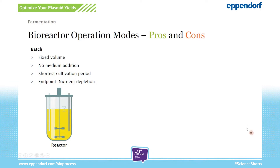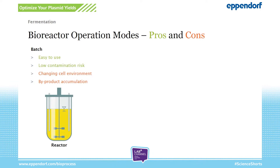The pros of batch fermentation are that it is easy to use and has a low contamination risk, since you only open the bioreactor once at the beginning and once at the end. However, because you don't replenish nutrients, the cells are presented with an ever-changing environment, which can hinder growth and yields and also lead to the accumulation of unwanted byproducts in your bioreactor.